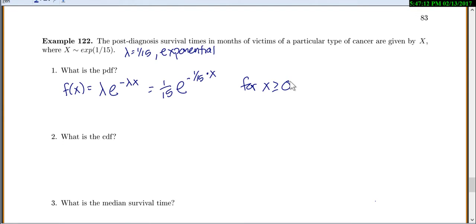So finding these things is pretty easy when you have all of your formulas. Find the CDF. We could integrate our PDF, but instead, let's just save ourselves some time and look at our formula. 1 minus e to the negative lambda x. So in our case, it'll be 1 minus e to the negative 1 over 15 times x. Again, for x greater than or equal to 0.